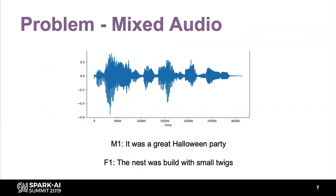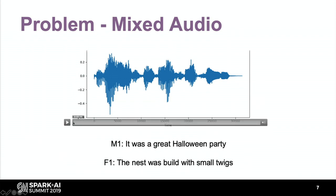Let's listen to some mixed sounds. This is in Danish. The two sentences are: 'It was a great Halloween party,' spoken by male one, and 'The nest was built with small twigs,' spoken by the female. They're talking at the same time.